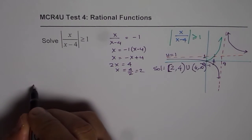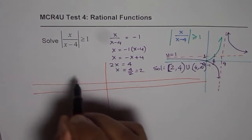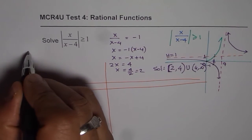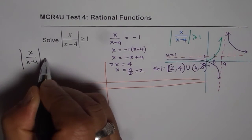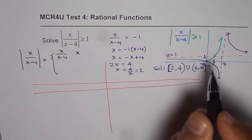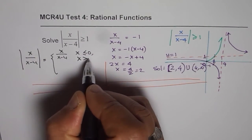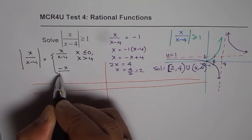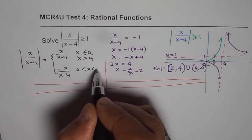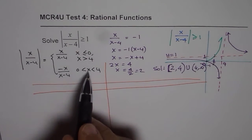The alternate approach: when working with absolute value functions, you handle two domains — one where the function is positive and one where it is negative. The absolute value of x over x minus 4 equals x over x minus 4 when x is less than or equal to 0, or when x is greater than 4. It equals negative x over x minus 4 when x is between 0 and 4. We solve the inequality within each of these two groups.